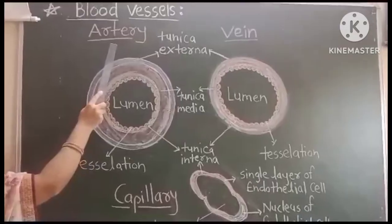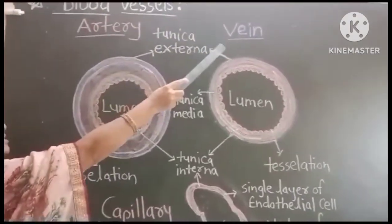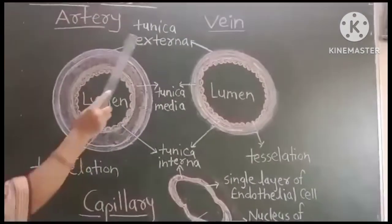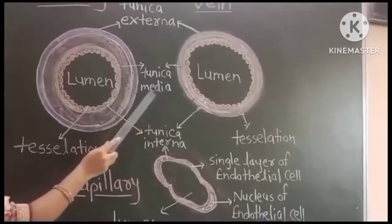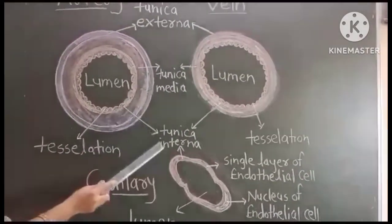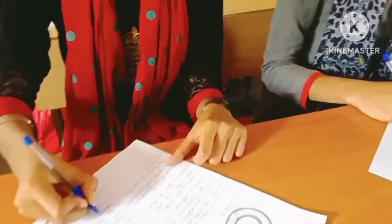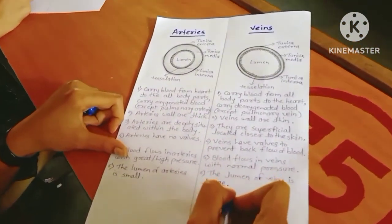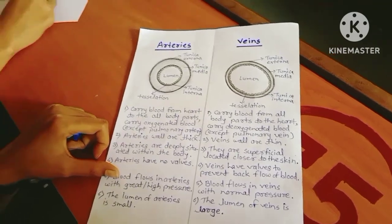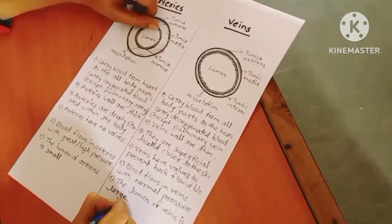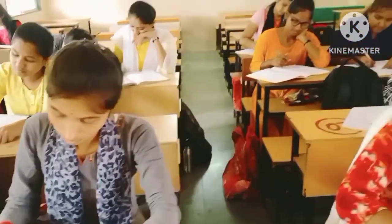First blood vessel: artery; second blood vessel: vein; third blood vessel: capillaries. Arteries and veins are made up of three layers. The outermost layer is called tunica externa, made up of collagen fiber. The middle layer is called tunica media, made up of smooth muscles and elastic fiber. The innermost layer is called tunica interna.